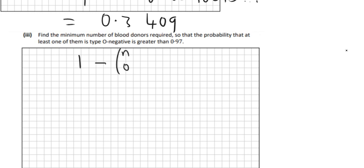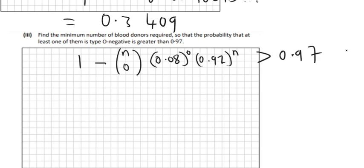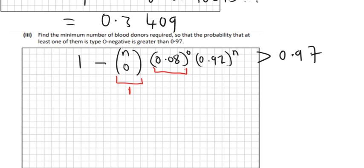Because it's still the same thing — it's still for at least 1 — so this worked the last time and it'll work again. So it's 0.08 to the power of 0, and then 0.92 to the power of N take away 0, which is just N. And we want all of that to be greater than 0.97. N choose 0 just ends up being 1 — anything choose 0 is 1 — and anything to the power of 0 is 1 as well. So really all we get is 1 take away 0.92 to the power of N is greater than 0.97.